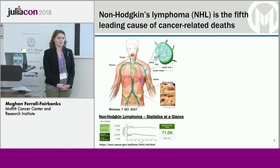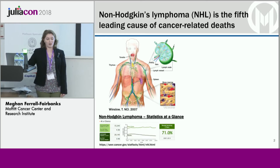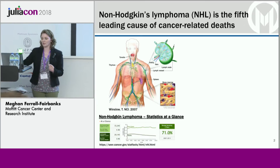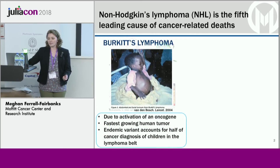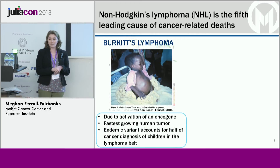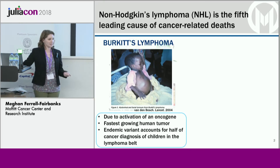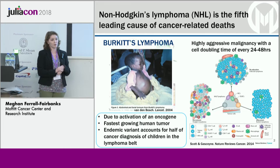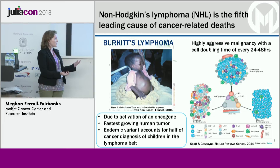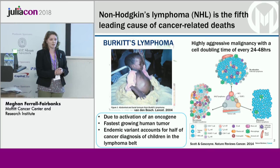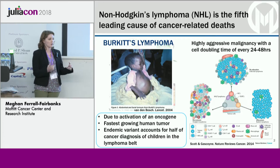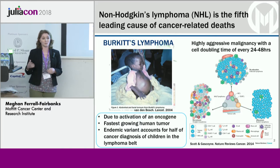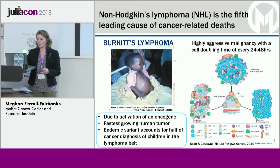One type of cancer that I study is non-Hodgkin's lymphoma, which is the fifth leading cause of cancer-related death in the U.S. This is cancer of your lymph system, including your lymph nodes and tonsils. The subset I really focus on is Burkitt lymphoma, which is the fastest growing tumor. It has an activated oncogene and a really high doubling time — every 24 to 48 hours. Our hypothesis is that this quick doubling time has to do with recruitment of fibroblasts and macrophages already where your tumor is, which allow the cancer to grow so quickly.